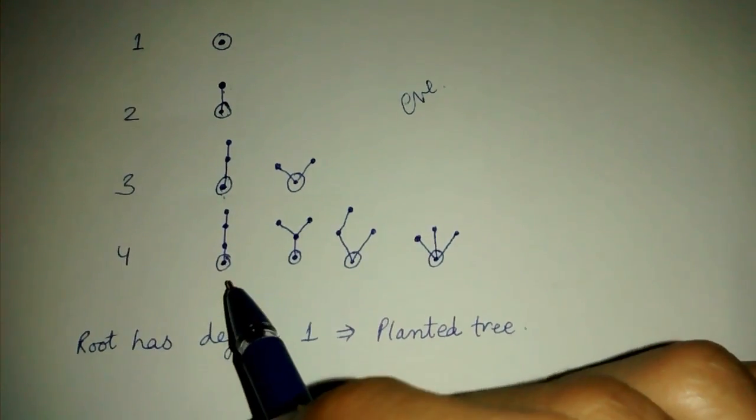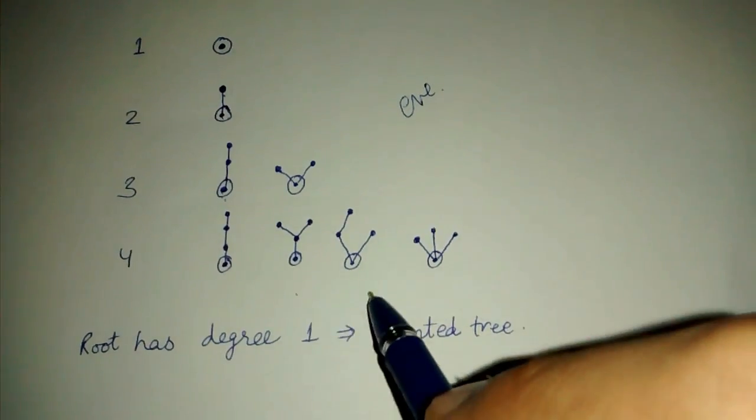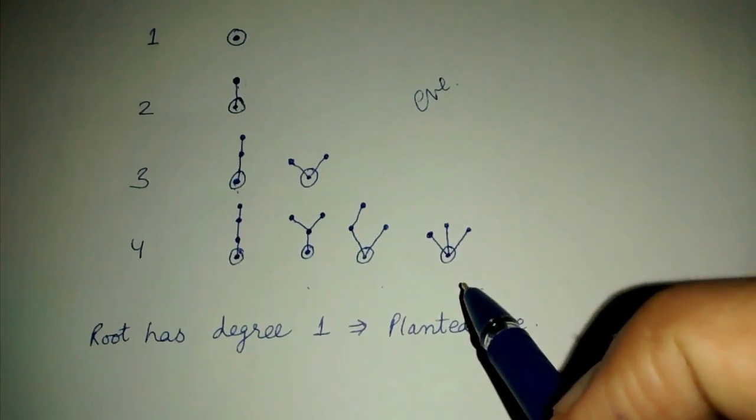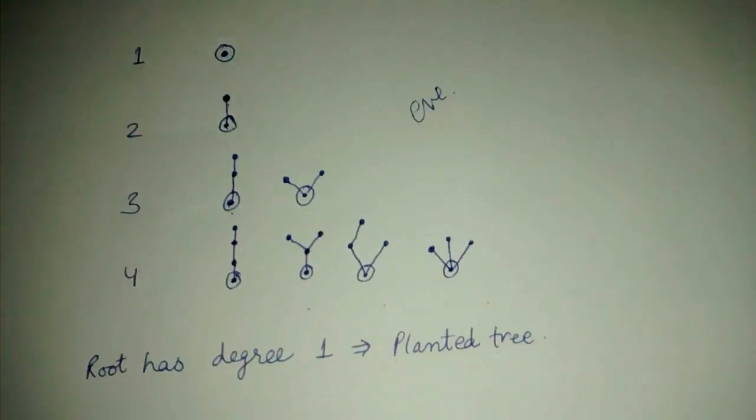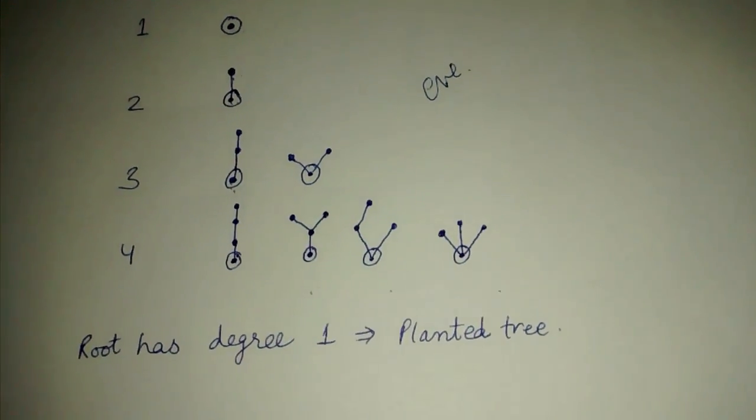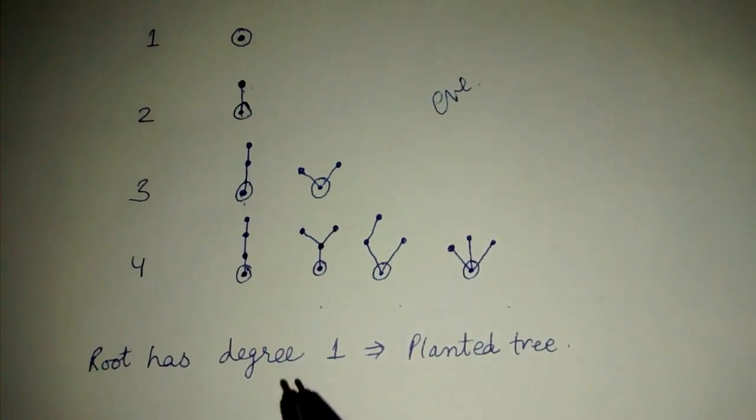And in the fourth one, if we count, then there are four types of possible rooted trees which can be found. Now we also define a term called a planted tree. In this planted tree, root has degree one.